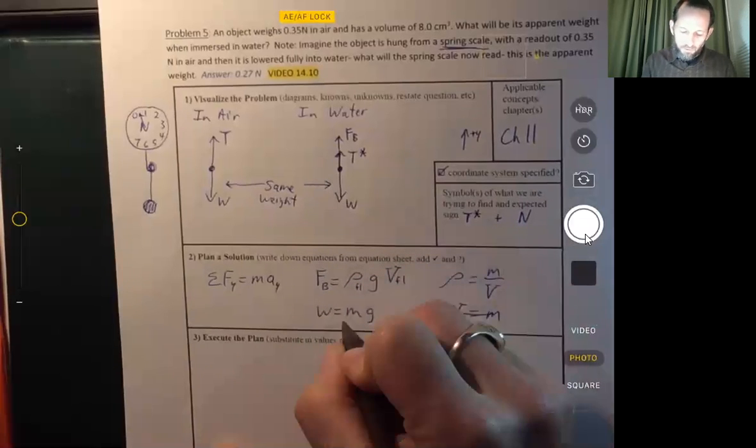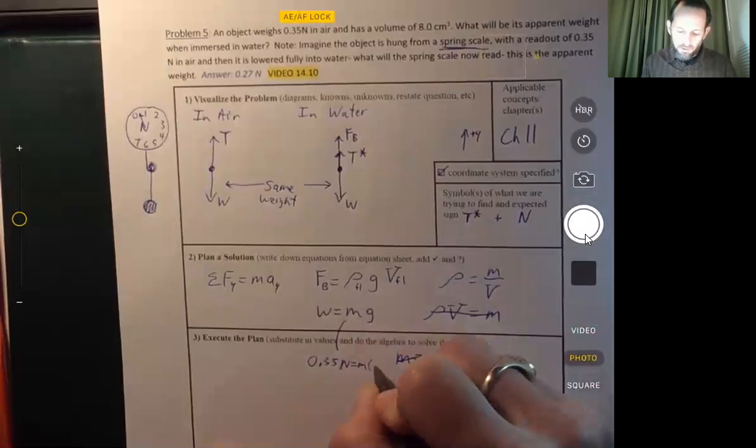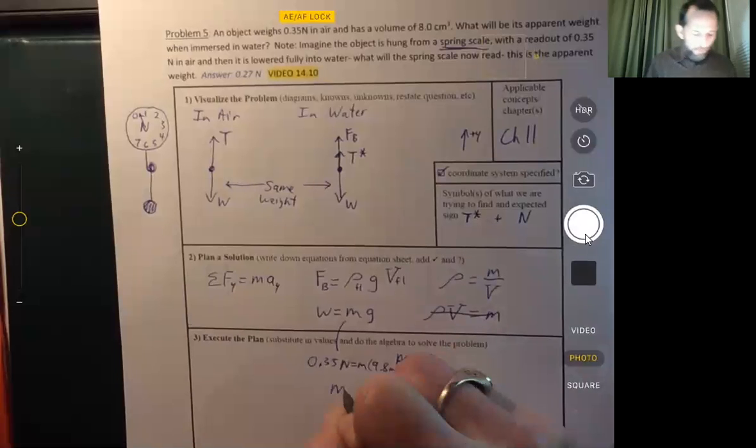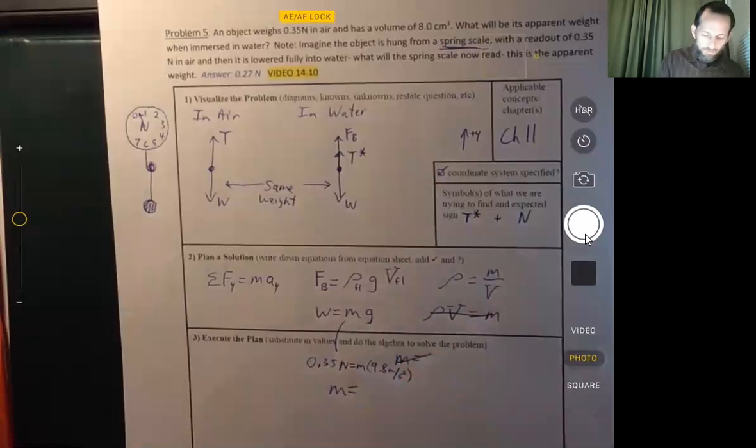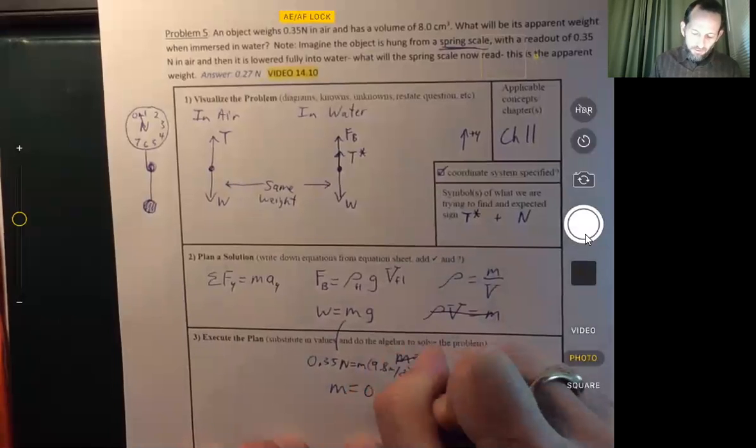And so 0.35 newtons equals m times g. And so the mass, 0.35 divided by 9.8, 0.0357 kilograms.